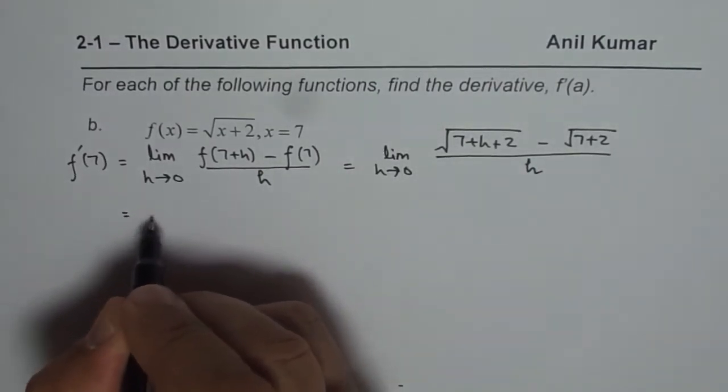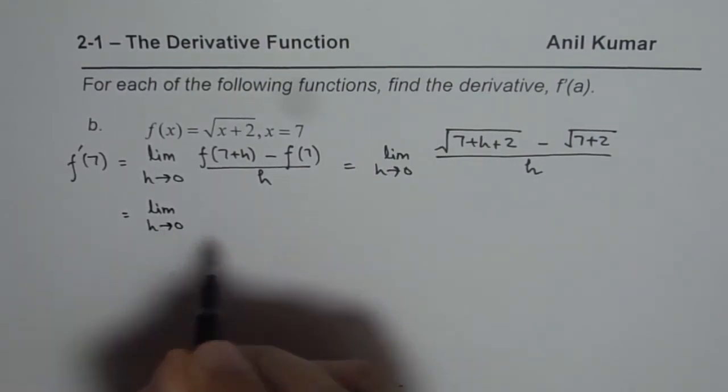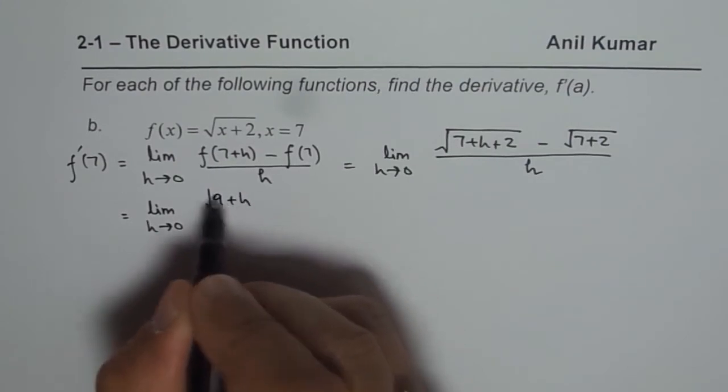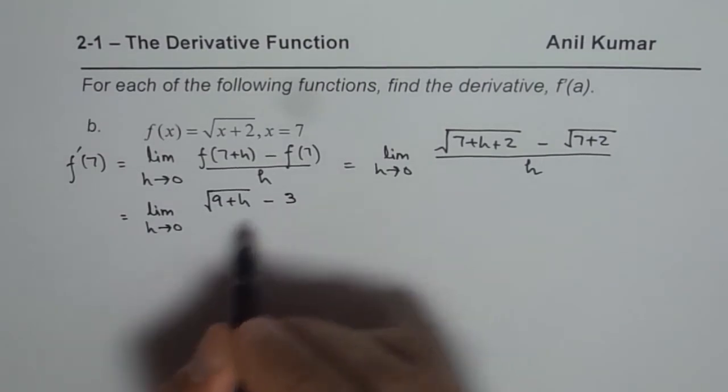Now this could be written as limit h approaches 0. And 7 plus 2 is 9, so I will write 9 plus h minus square root of 9 which is 3 over h.